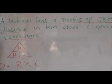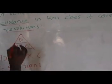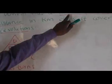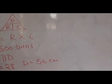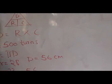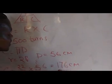What is the revolution? It's 500 revolutions. What is the circumference? We don't have it, but the formula is pi D. We've been given the radius of 28 centimeters, so the diameter is twice the radius, which is 56 centimeters. Circumference equals 22 over 7 times 56, giving 176 centimeters. So this is our circumference.